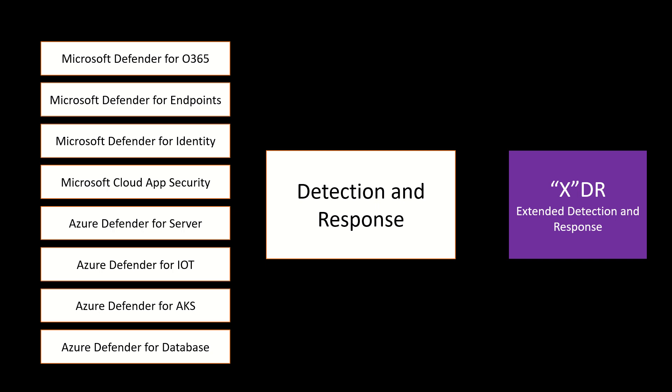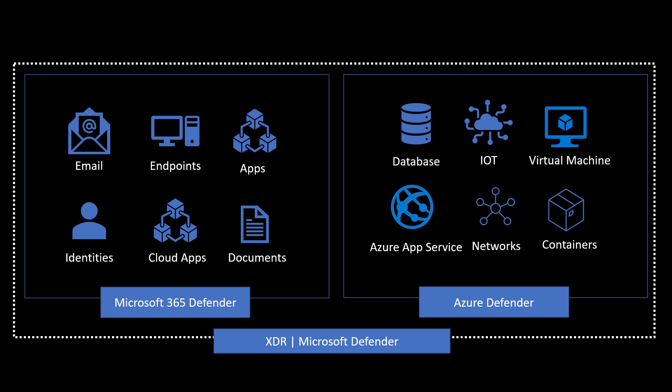If we combine the entire M365 Defender suite with Azure Defender, each and every state is protected and intelligence is shared. That's what Microsoft Extended Detection and Response capabilities is all about — every intelligence is getting shared. When we talk about Microsoft, it's not only about the threat intelligence Microsoft generates; if you have different security solutions, you can use the Graph API to send other intelligence as a threat indicator, and that will be used to determine if there is any impact.